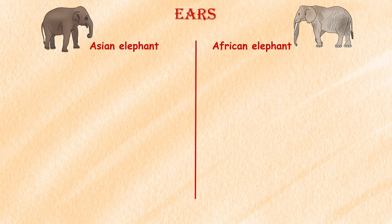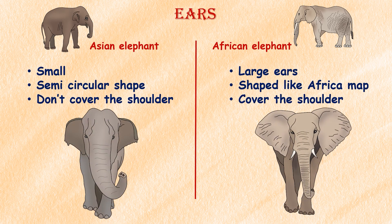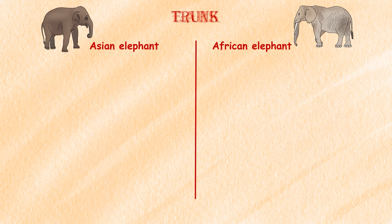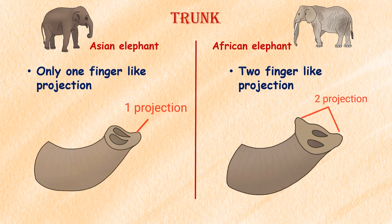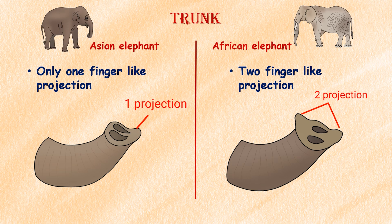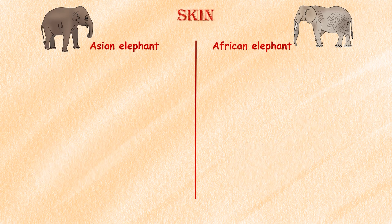Ears: African elephants have much larger ears, similar to the shape of Africa, which can cover the shoulders, whereas Asian elephants' ears are smaller, more semi-circular, and don't cover the shoulders. Trunk: The trunks of African elephants are longer and have two finger-like projections at the tip, while the trunks of Asian elephants have only one.